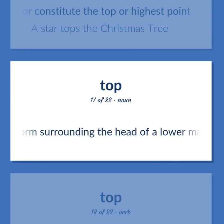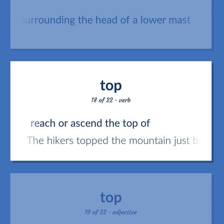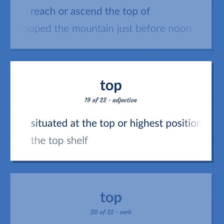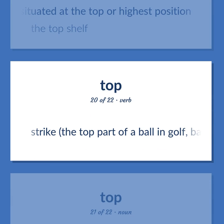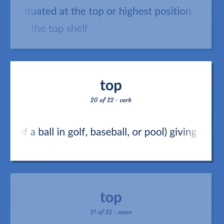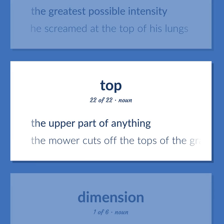Platform surrounding the head of a lower mast. Reach or ascend the top of. Example: The hikers topped the mountain just before noon. Situated at the top or highest position. Example: The top shelf. Strike the top part of a ball in golf, baseball, or pool, giving it a forward spin. The greatest possible intensity. Example: He screamed at the top of his lungs. The upper part of anything. Example: The mower cuts off the tops of the grass.